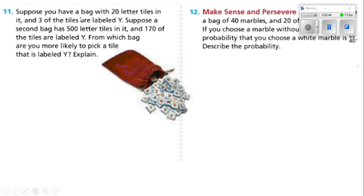Let's try number 11. Suppose you have a bag with 20 letter tiles in it and three of the tiles are labeled Y. Suppose a second bag has 500 letter tiles in it and 170 of the tiles are labeled Y. From which bag are you more likely to pick a tile that is labeled Y? Well, the first one said 20 tiles with three of them Y. That's three out of 20. If I put that in my calculator, I'd have to take three divided by 20, and that would give me the percent of the chance of getting a Y. Now, if I take the second bag, it would be 170 out of 500. And I'm just going to say that sounds like a better chance to me of getting that Y.